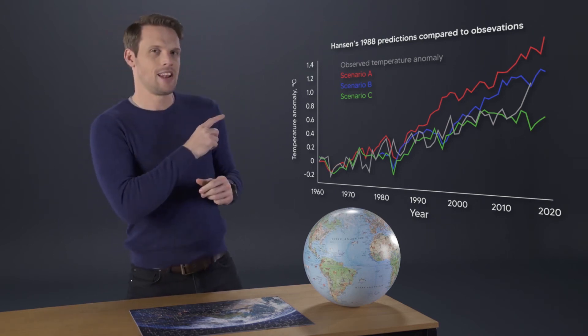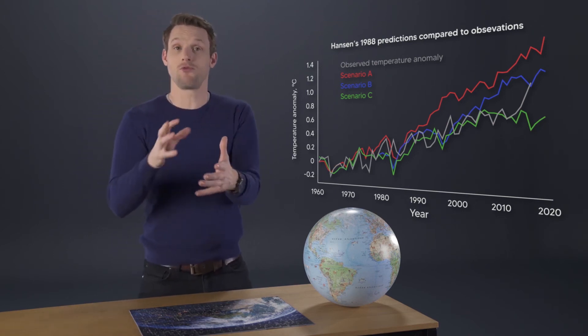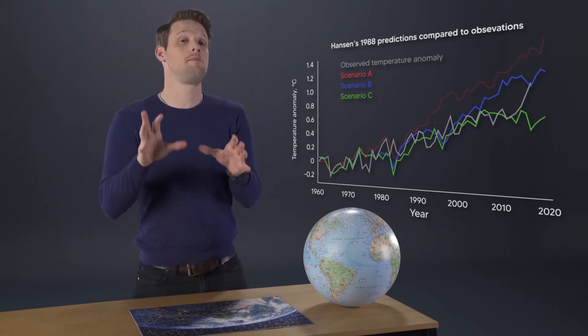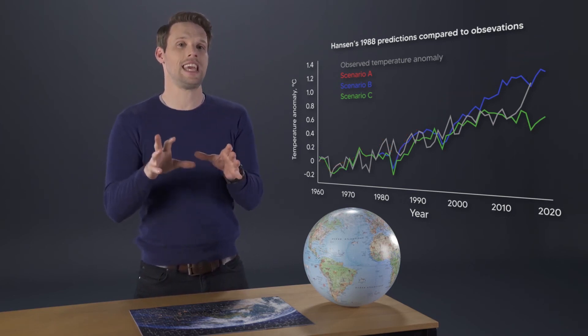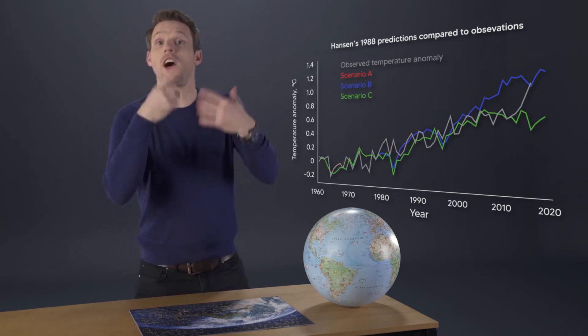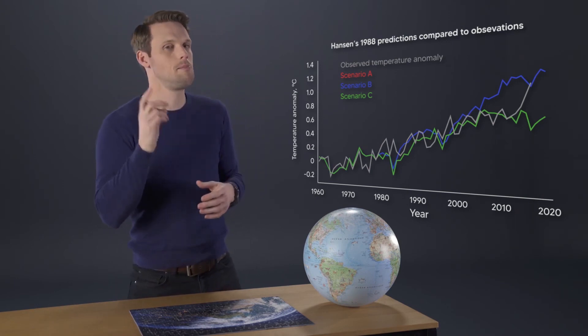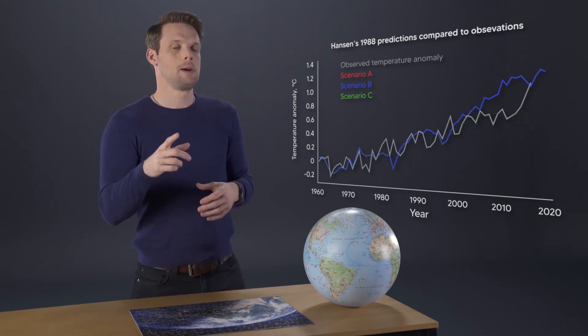Three different predictions for how the temperature could change depending on the level of greenhouse gas emissions from human activities. The actual observed temperatures run pretty close to scenarios B and C, and as it's continuing to rise rather than fall, it's closest to B. So the model's predictions from 30 years ago are holding up.